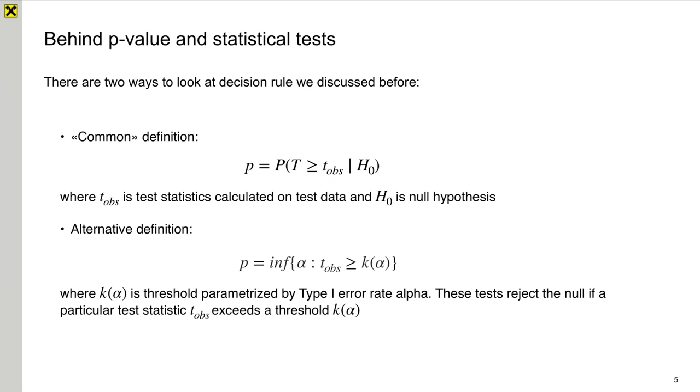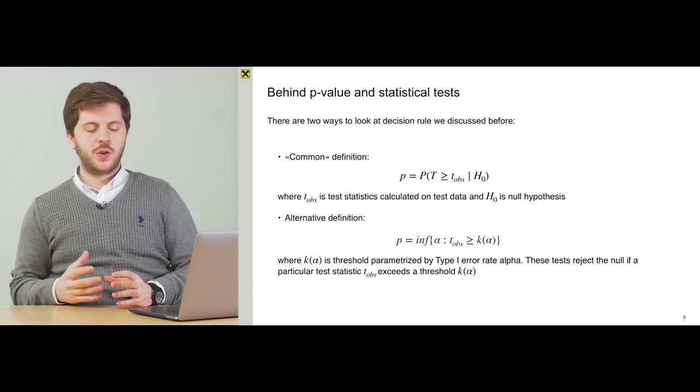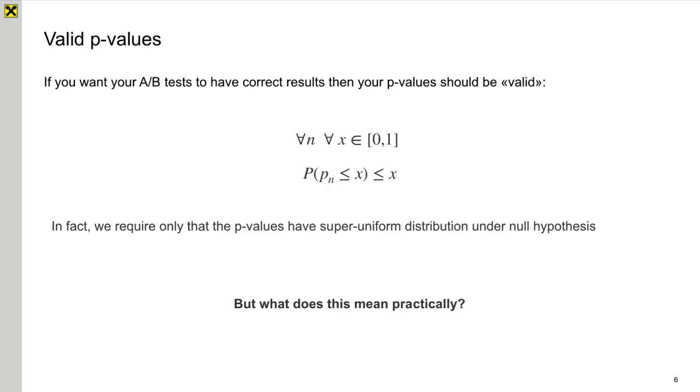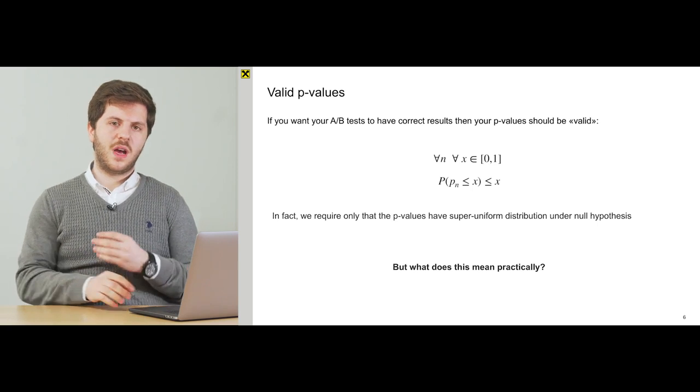And alternative definition tells us that p-value is the smallest alpha, which is type 1 error rate. And if we want our definitions to work, we should know that there is such a thing as valid p-values. What does it mean? Valid p-values are p-values that have a super uniform distribution. In fact, this is not a very popular definition when we are talking about super uniform distribution. So let's understand what does it mean practically. What does it mean that our p-values have super uniform distribution under null hypothesis?